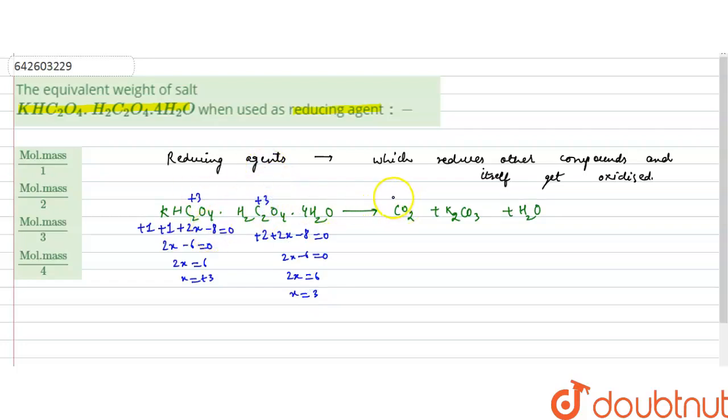And it is going from +3 oxidation state to +4 oxidation state. So the change in oxidation state for one carbon atom is one. And for four carbon atoms, here are two carbon atoms and two, four carbon atoms total. So the total change in oxidation state for four carbon atoms would be 1 × 4 = 4, and this is the n-factor for the salt. N-factor of the salt is four. That is, total change in the oxidation state is the n-factor.